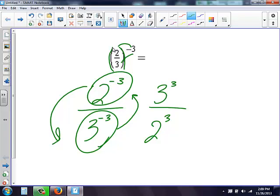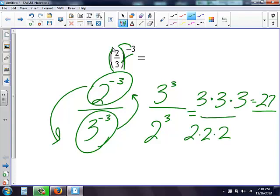And then I can solve here. 3 to the third is the same thing as 3 times 3 times 3. 3 times 3 is 9 times 3 is 27. 2 to the third is the same thing as 2 times 2 times 2. 2 times 2 is 4 times 2, I get 8.